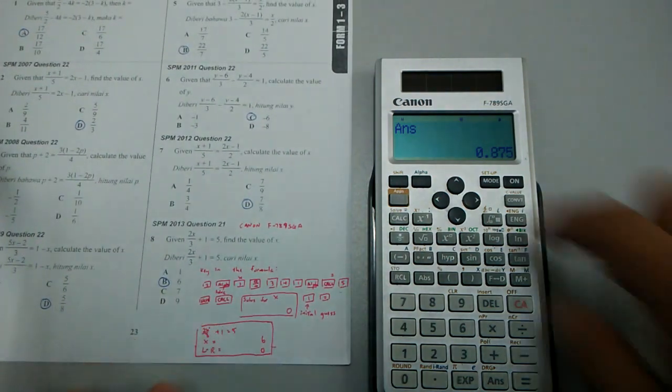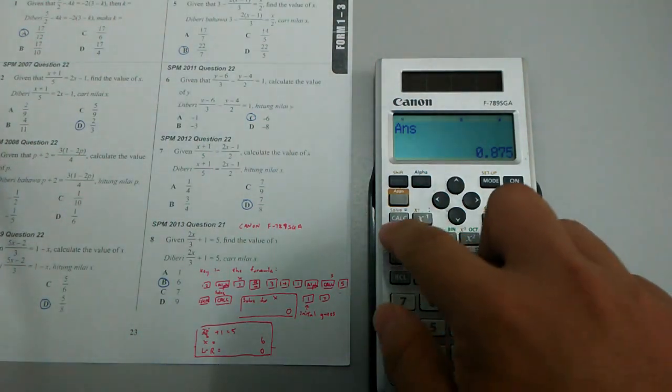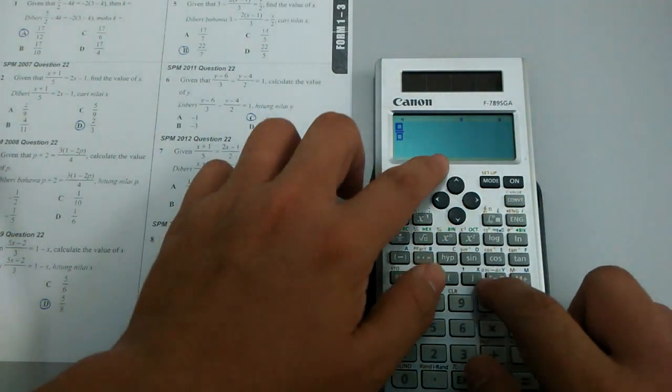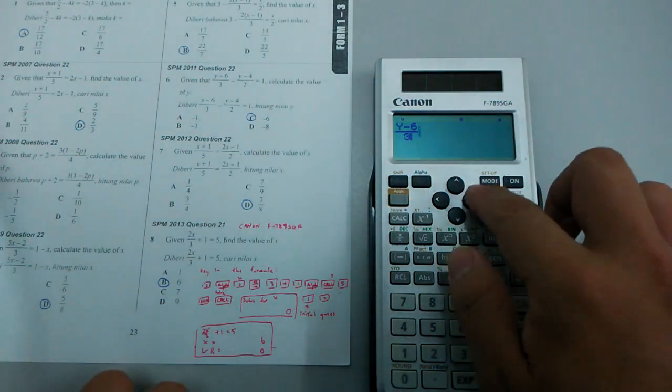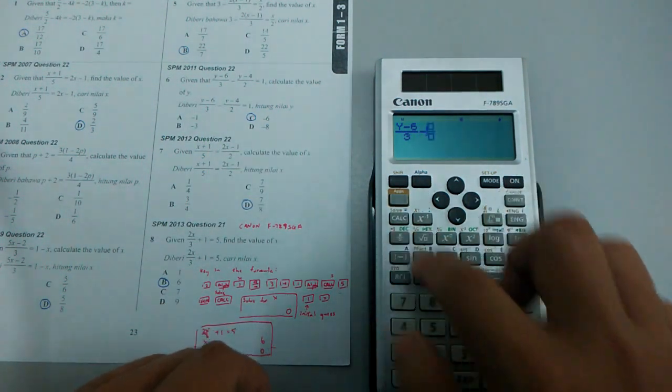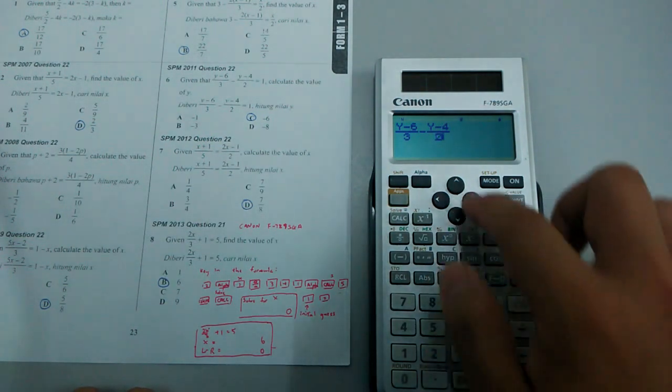We'll try again with the question with the unknown y. I key in alpha y minus 6 over 3 minus alpha y minus 4 over 2 alpha equal 1.